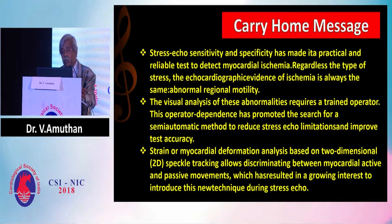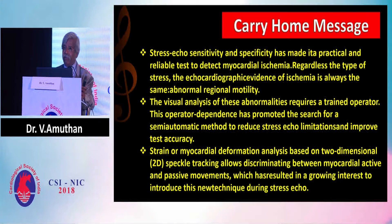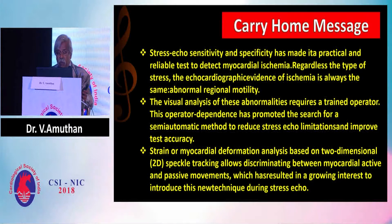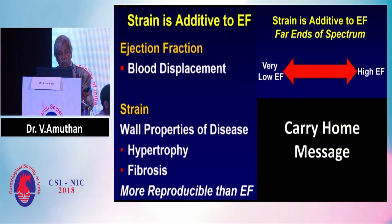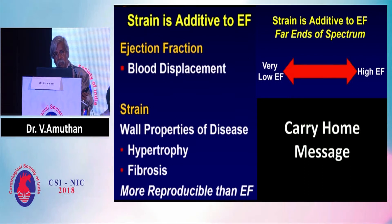Visual analysis of wall motion abnormalities requires a trained operator. It is very difficult to pick up because we are looking at longitudinal contraction and relaxation, whereas our eye is accustomed to contraction towards the center. Strain myocardial deformation analysis based on 2D speckle tracking allows discrimination between myocardial active and passive movements, resulting in growing interest to introduce this technique during stress echo. Another take-home message: ejection fraction measures displacement of blood, whereas strain analysis also assesses wall properties such as hypertrophy and fibrosis, and is more reproducible. In both spectrums — very low and high ejection fraction — global longitudinal strain average is very beneficial.